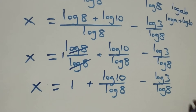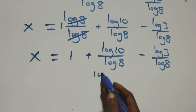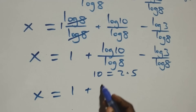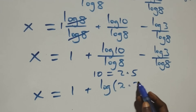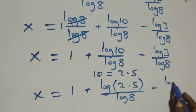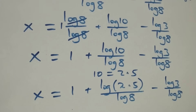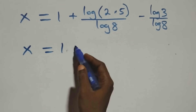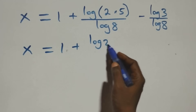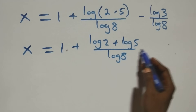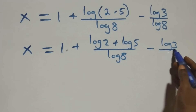The next step: we can also express 10 as 2 times 5, which implies x equals 1 plus log(2×5) over log 8 minus log 3 over log 8. Then we apply the law of logarithms and all we have becomes x equals 1 plus (log 2 plus log 5) over log 8, minus log 3 over log 8.